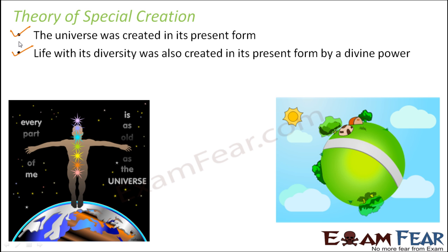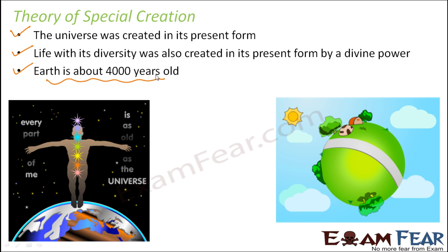This theory was falsified a little later, and that is how all the scientific theories started coming up — like the big bang theory told us about the origin of the universe, and later came all those experiments we discussed. Those theories told us how life started to exist on earth. According to the theory of special creation, earth is just 4,000 years old, but actually earth is about 4.5 billion years old. So there is a huge difference between the two.